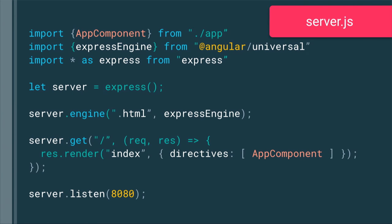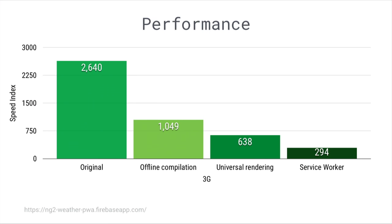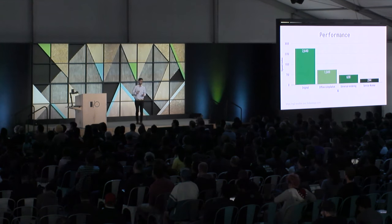To get this set up, we use Express and just import in Angular Universal, which doesn't take a lot of work. And here's what the numbers look like: we start off with a speed index of 2,640 on 3G. Once you've added offline compilation, Service Worker, and Universal Rendering, we're down to almost nothing. Universal Rendering has made a huge difference — and this is very much true of the React app as well. Server-side rendering makes a really huge difference. And as you can see, with Service Worker in place again, repeat visit is close to nothing — users are going to feel it being instant.